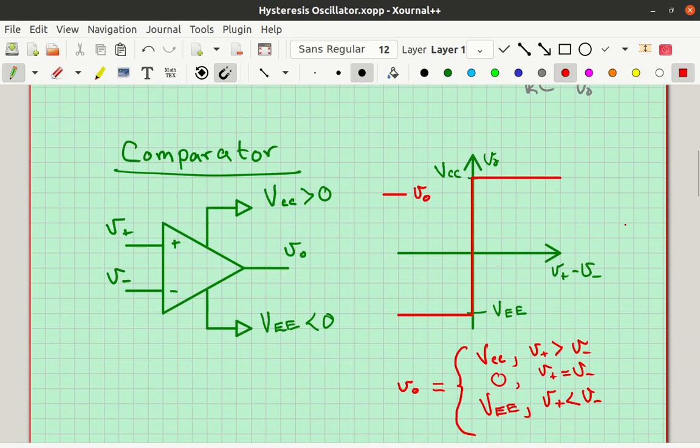Let's look at the comparator next. The comparator is essentially an analog if statement. It says, if V plus is greater than V minus, let the output go to Vcc. If V plus is less than V minus, let it go to Vee. Vcc and Vee are the power supply voltages for the op amp.